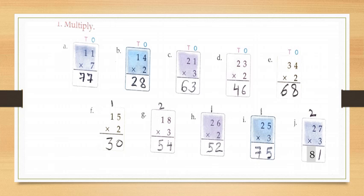Now G part children: eighteen multiply by three. First multiply the ones by three — that is eight into three is twenty four. Write four under ones and carry two tens. Now multiply the tens by three — that is one into three is three. Add two carry, so three plus two is five. So your answer will be fifty four.